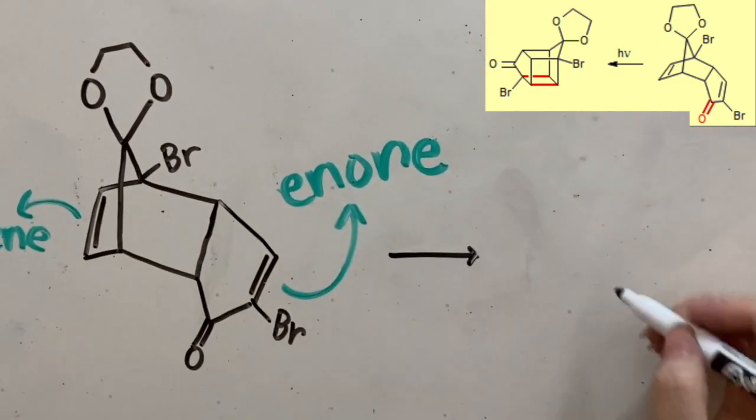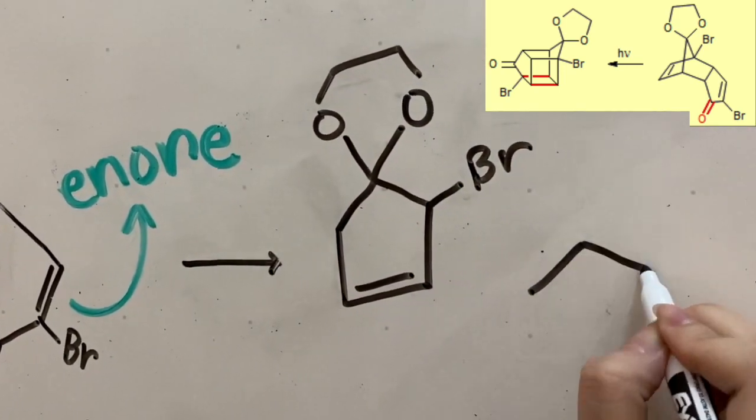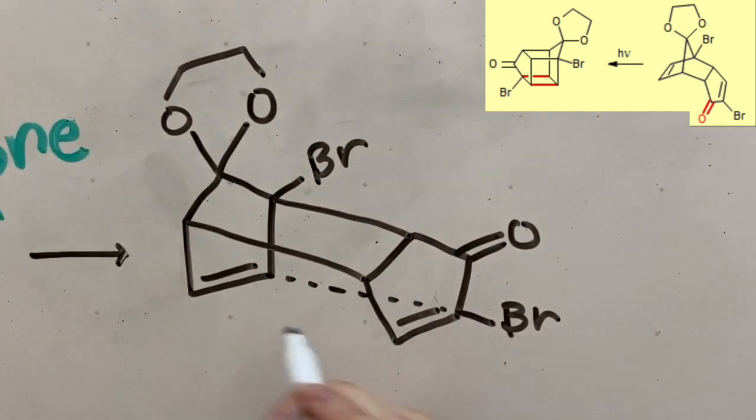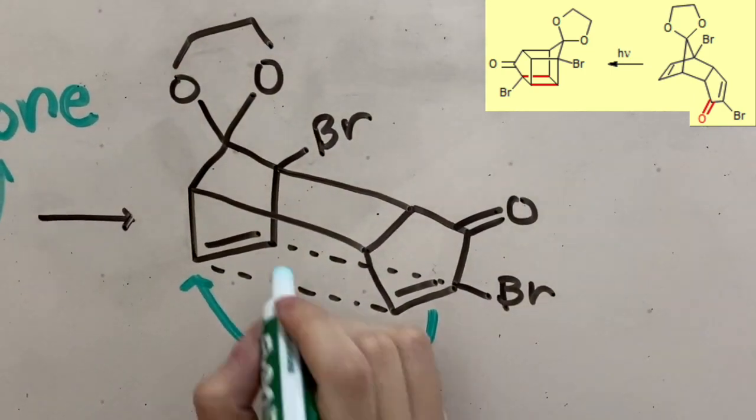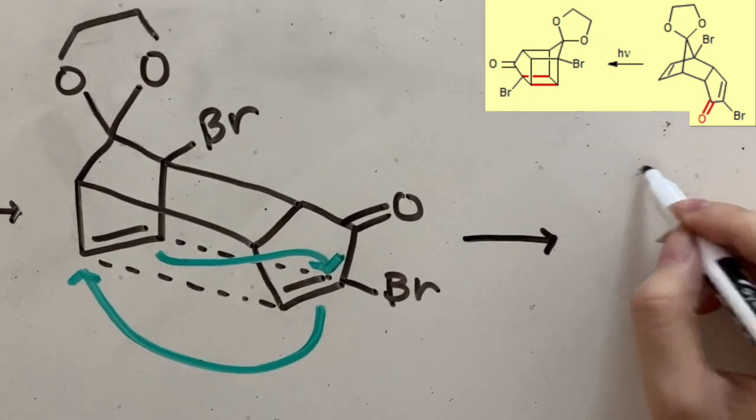We can redraw the starting material to see the mechanism clearer. The pi bonds will break to form new sigma bonds and create the cyclobutane.